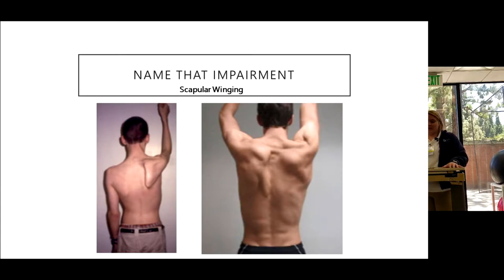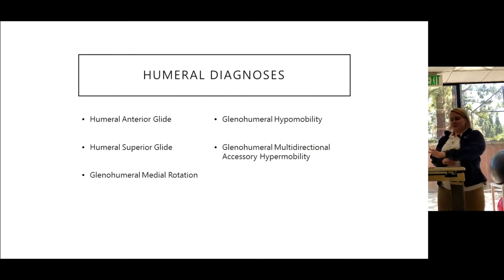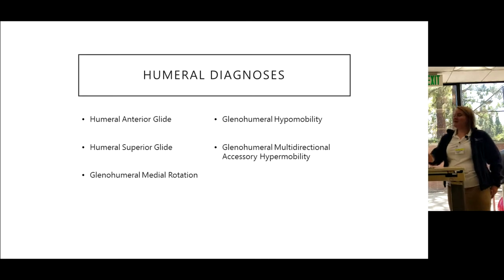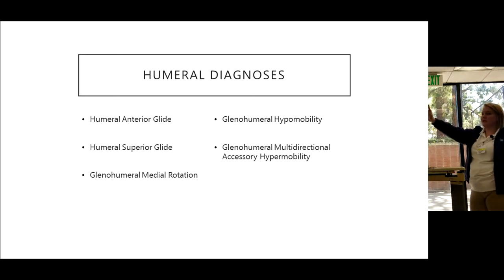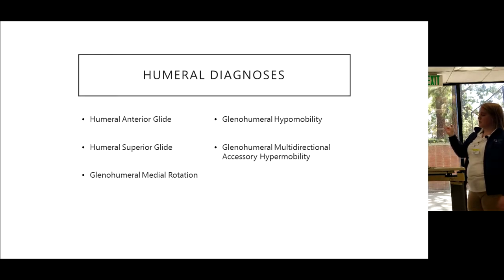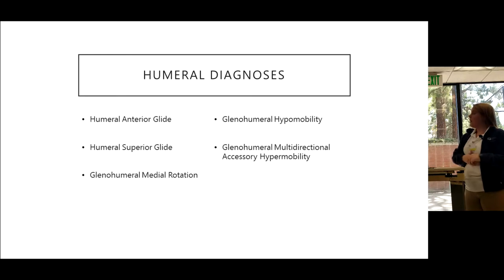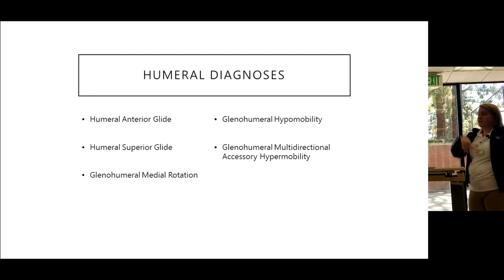Those were the scapular diagnoses. Now here's your word bank for humeral diagnoses. Humeral anterior glide is the one we see every single day — very common. The other two on the far side are more generalized: excessively mobile or excessively immobile. Our main focus for treatment is humeral anterior glide because that's most common.